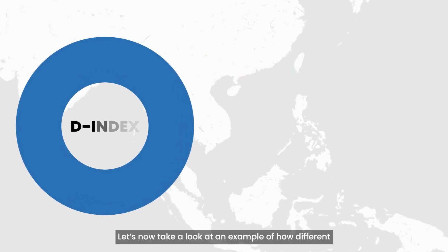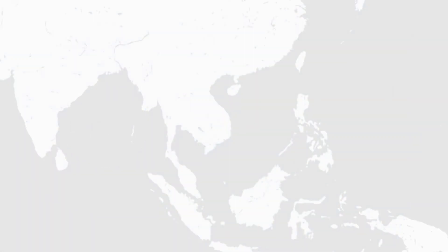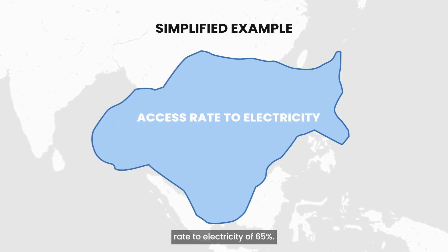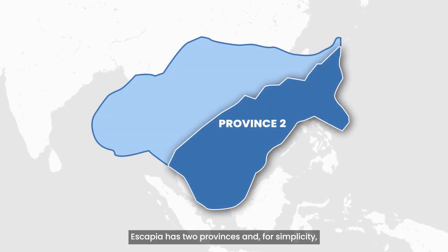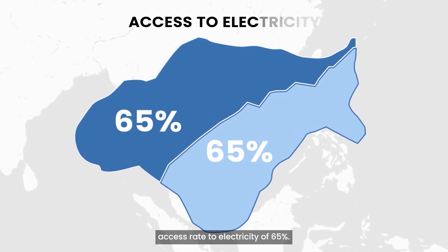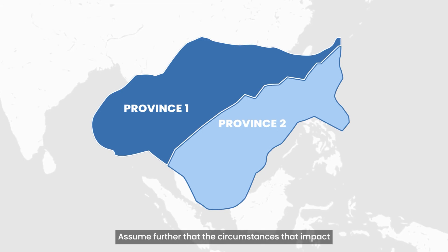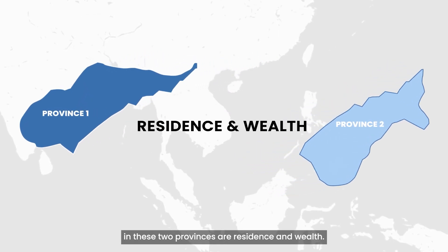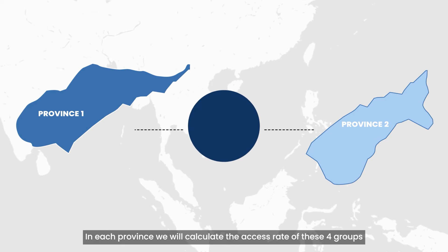Let's now take a look at an example of how different access levels amongst population groups can impact the D-Index value. Let's say country Escapia has an average access rate to electricity of 65%. Escapia has two provinces and, for simplicity, assume they both also have the same average access rate to electricity of 65%. Assume further that the circumstances that impact the access rates of the population groups in these two provinces are residency and wealth.